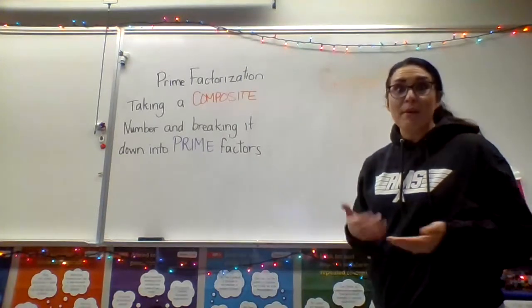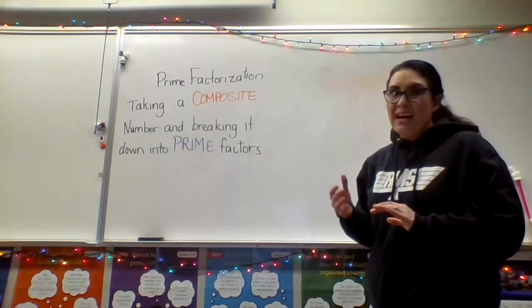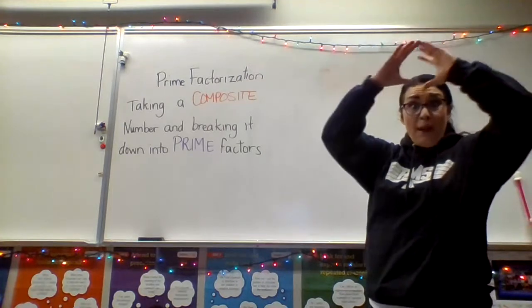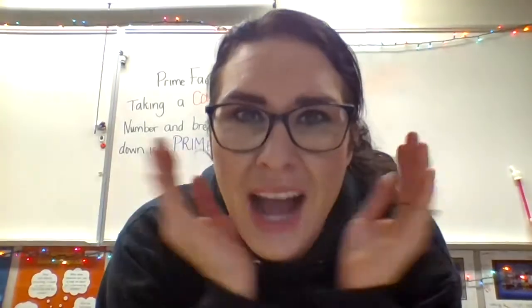Another term you might hear when talking about prime and composite numbers is prime factorization — that's what factor trees are about. We take that big composite number that's made up of lots of different tiny factors and we break it down to get its prime factors. I like to think of it as getting the DNA sequence of that composite number. So if we're looking at a big composite number like 100, prime factorization is like sequencing its DNA so we can figure out what the basic building blocks of 100 are.